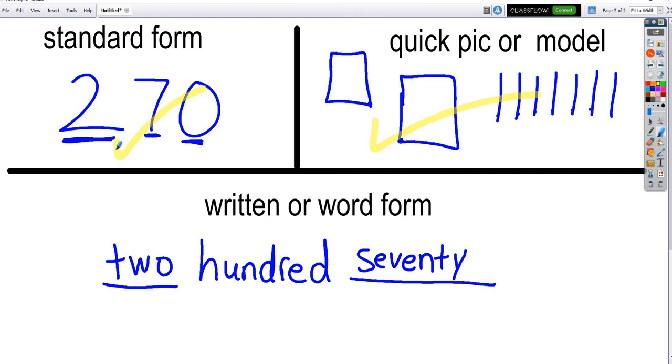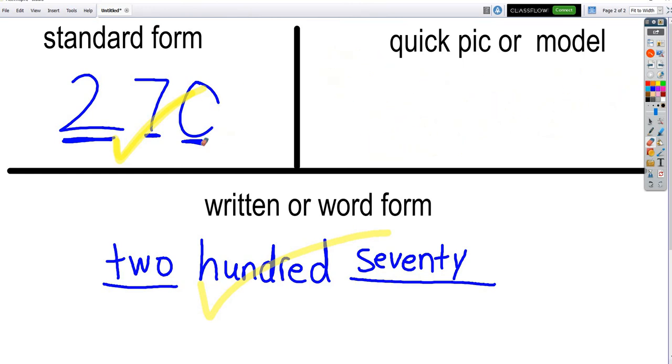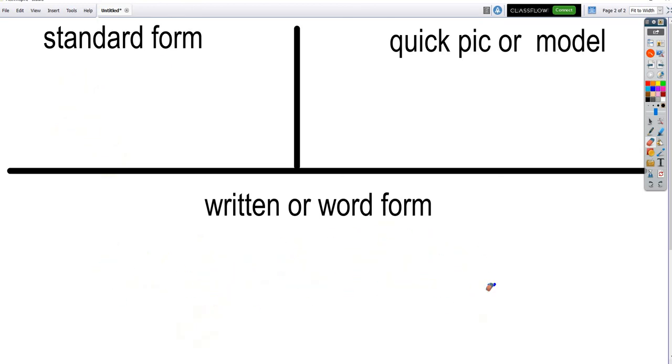Now, we have all three ways. We have standard form where we just write it in numbers. We have a quick picture where we use the blocks and we draw it. And then, written or word form is when we write it with words. This is not that bad, is it? No. You guys are going to get this. All right. The last way I'm going to practice with today is I'm going to write it in written form. I'm not done that way yet. So, I'm going to write the number in written form or words. And then, you're going to have to figure out the standard form and the quick picture, okay?